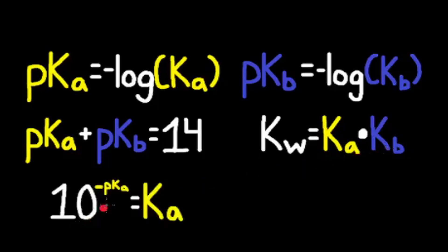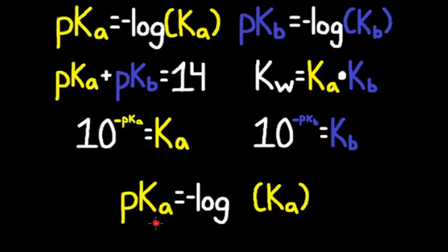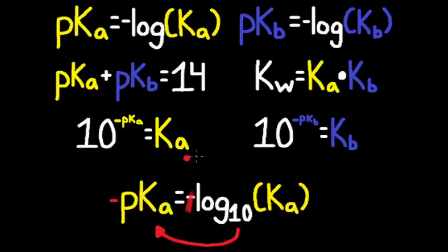Finally, we need to know that 10 to the negative pKa is equal to Ka, and 10 to the negative pKb is equal to Kb. But instead of memorizing these formulas, we can derive them. pKa is equal to the negative log of Ka. When we take the log without specifying the base, the base is assumed to be 10. Moving the negative to the other side gives us negative pKa, and the negatives cancel, so 10 to negative pKa is equal to Ka.